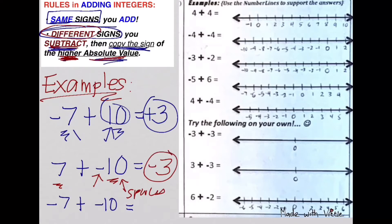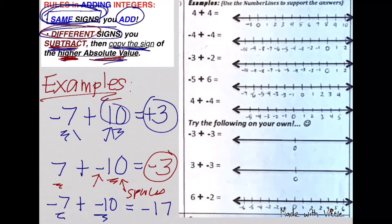Another example: negative 7 plus negative 10. Are they of the same signs? Yes, because they're both negative. So what do we do? We add them. 7 plus 10 is 17. Then just copy the same sign because they're both negative. And there's your final answer.